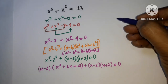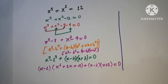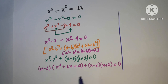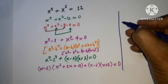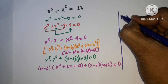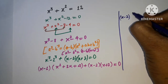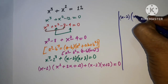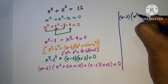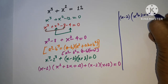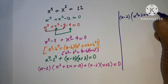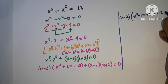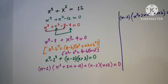Next, we take (x - 2) as a common factor, giving us: (x - 2)(x² + 2x + 4 + x + 2) = 0.